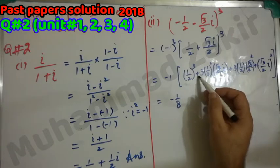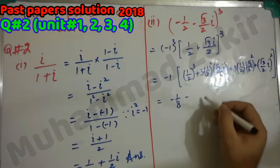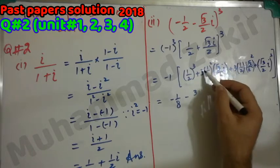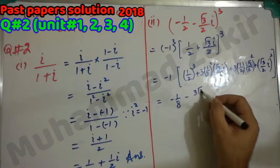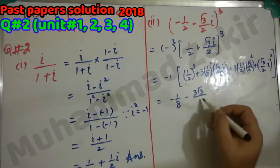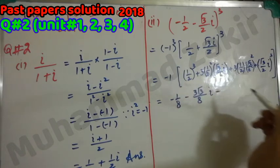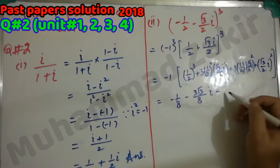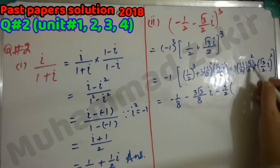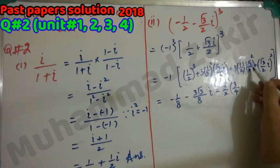Continuing the expansion: (1/2)² becomes 1/4, giving 3√3/4; multiplying by 2 gives 8iota terms. The iota squared term equals minus 1, giving 3/4 for that part.